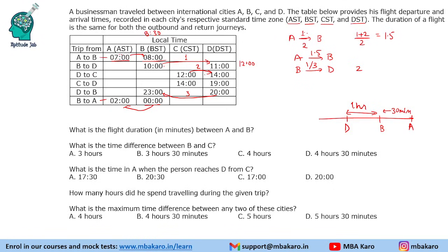Similarly, for D to C: he takes 2 hours going and 5 hours returning (shown as minus 2 and 5 in the table). Taking the average gives 3.5 divided by 2, which is 1 and a half hours — so the flight distance between C and D is 1 and a half hours. If going from C to D, starting at 14:00, he should reach at 15:30. But he is reaching at 19:00 — that's 3 and a half hours of extra duration. So D is ahead and C is behind by 3 and a half hours. The time difference between C and D is 3 and a half hours.